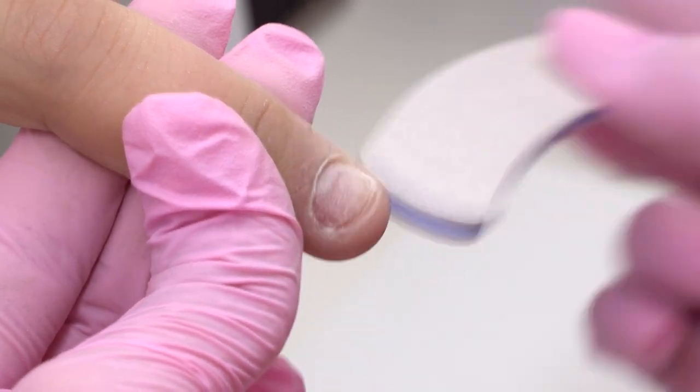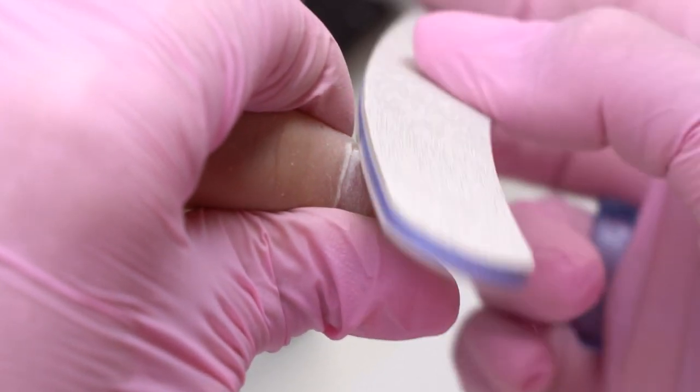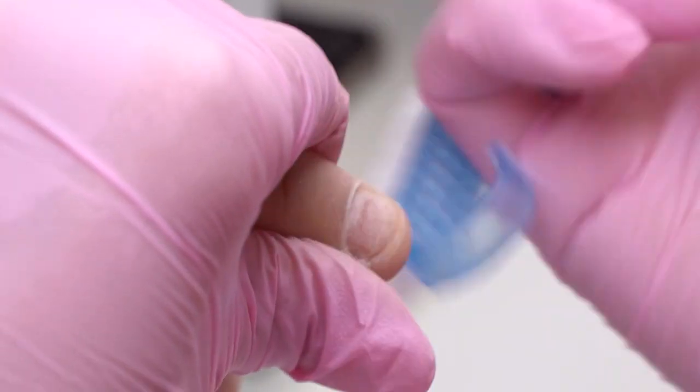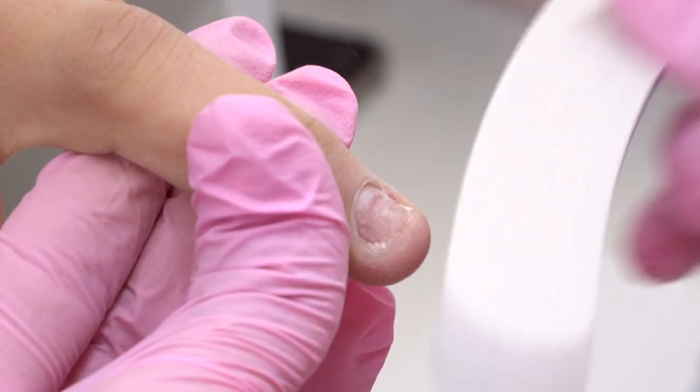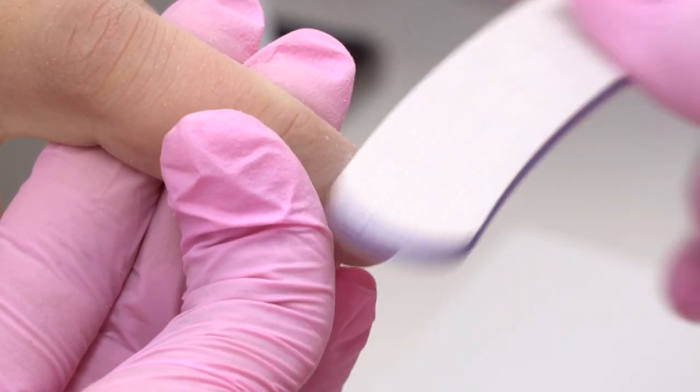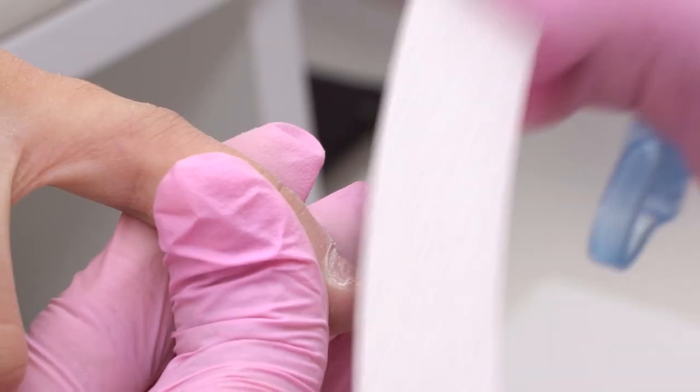Before cutting the cuticle, we polish the nail plate using a 240 grit nail file to lift up the nail scales well. Note that we don't cut the cuticle yet, since otherwise we can easily cut it. We polish it first and only then cut it off. Make long moves from left to right.